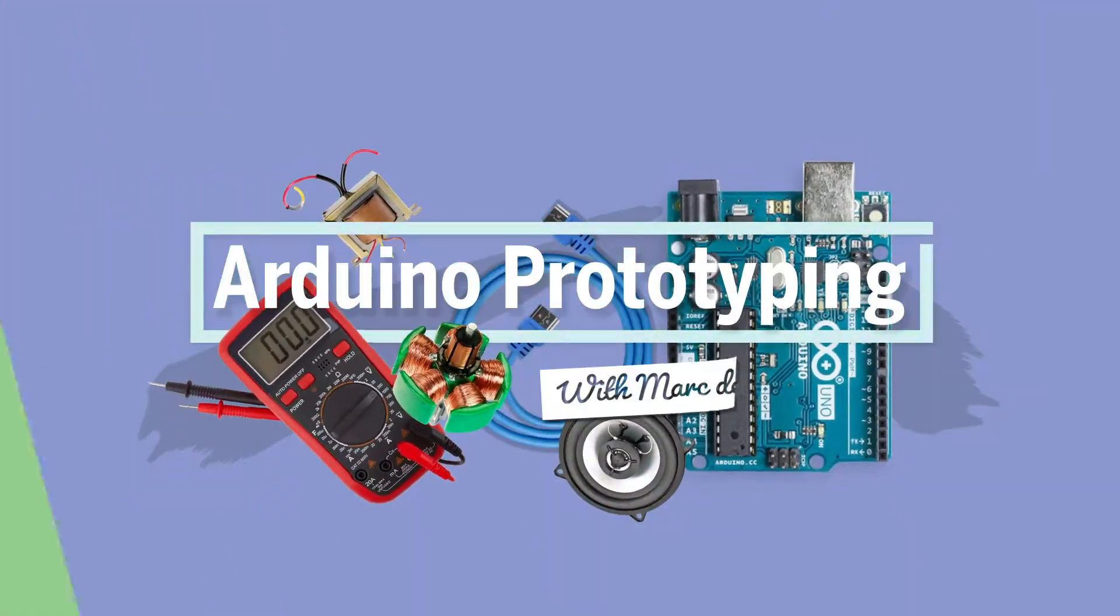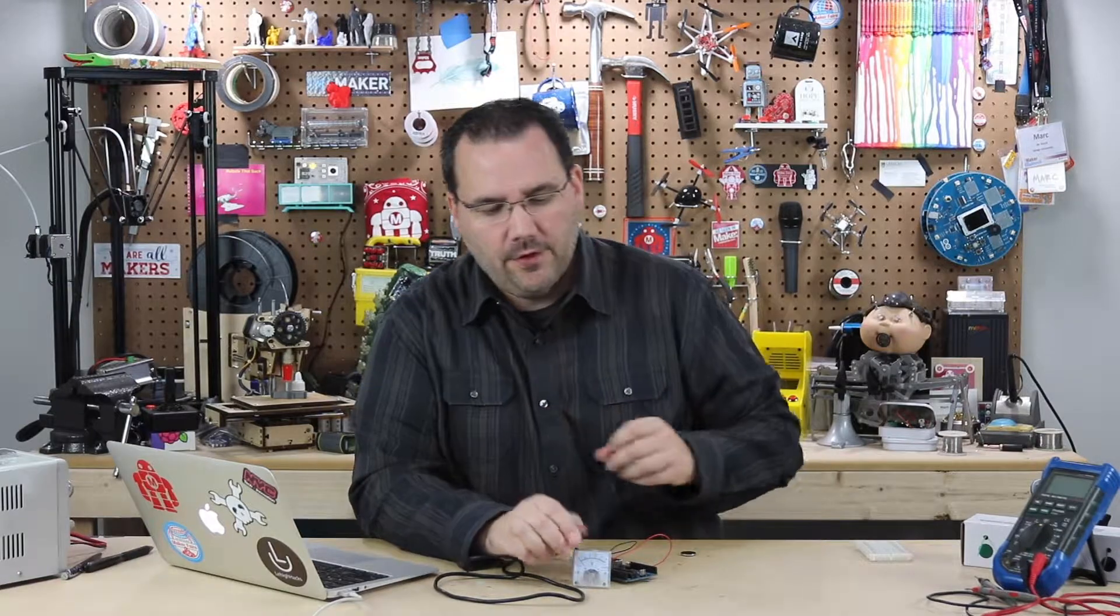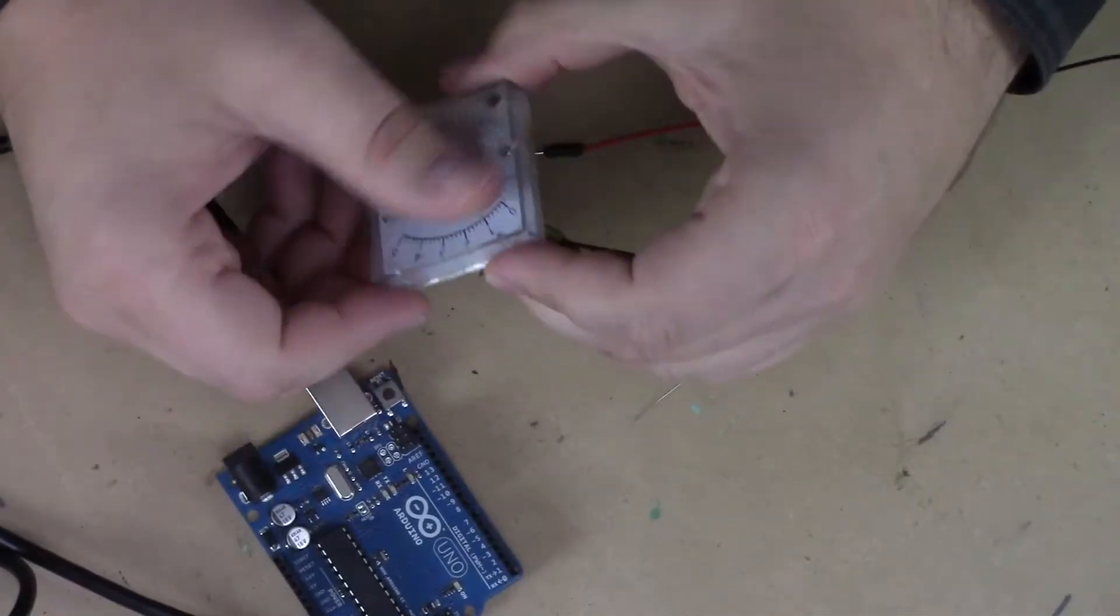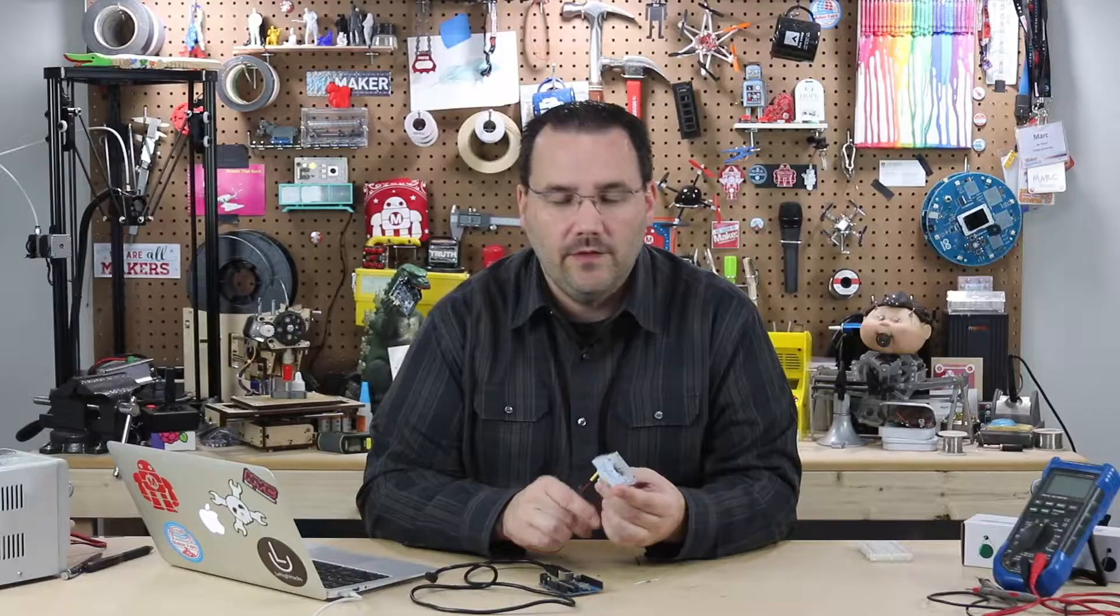Now we're going to take a look at how to create a unique, if not sort of quirky, display for your Arduino. What I have here is a panel meter, and they're pretty common. You can find them all over the place.